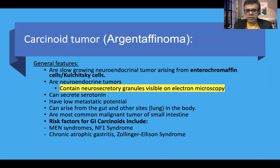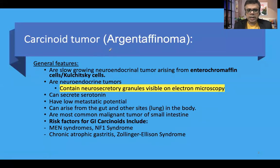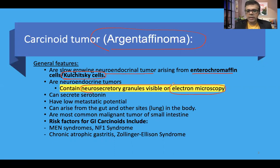Carcinoid tumors are also known as Argentaffinoma, due to their silver-staining property. They are slow-growing neuroendocrine tumors which arise from enterochromaffin cells, also known as Kulchitsky cells. They are confirmed as neuroendocrine tumors by neurosecretory granules visible on electron microscopy, which contain various mediators. Serotonin is one of the prime mediators. They have generally low metastatic potential, but high-metastasizing carcinoid tumors also exist.